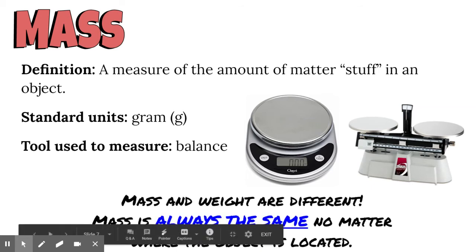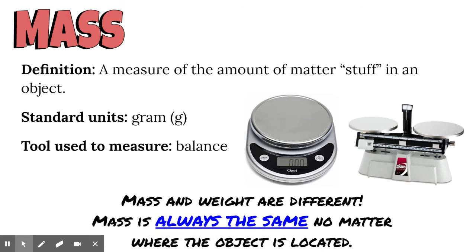Mass and weight are different. No matter where you are, your mass is going to stay the same. But your weight can change based on where you're located, and weight has to do with gravity. If we took you on the moon, your weight would be different than on earth because gravity is different, but your mass would always be the same.